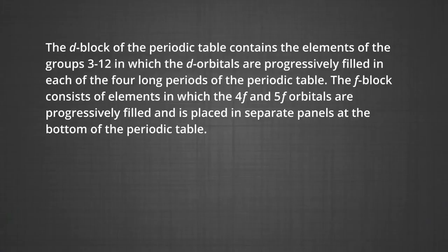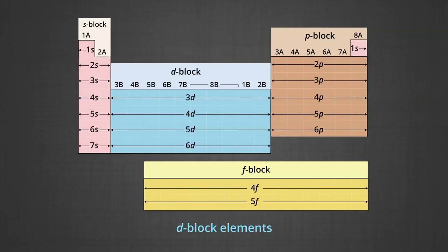The D block of the periodic table contains the elements of group 3 to 12 in which the D orbitals are progressively filled in each of the 4 long periods of the periodic table. The F block consists of elements in which the 4f and 5f orbitals are progressively filled and is placed in separate panels at the bottom of the periodic table. The names transition metals and inner transition metals are often used to refer to the elements of D and F block respectively.